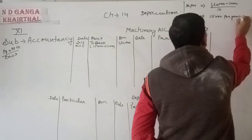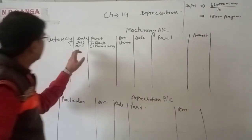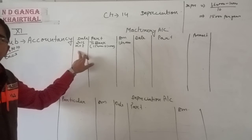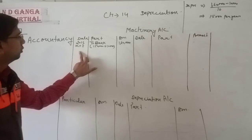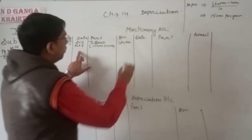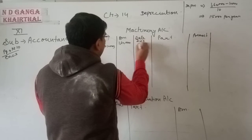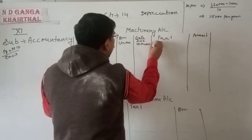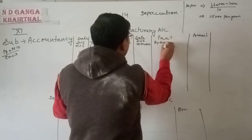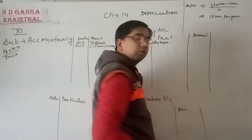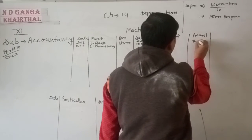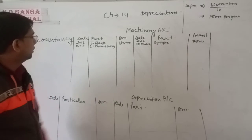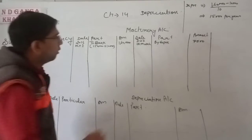Since the financial year closes on 31st March, for the first year we charge depreciation only for 6 months — from October 2016 to March 2017. So on 31st March 2017, by depreciation for 6 months: 7,500 rupees. The machinery account balance remains at 1,60,000 rupees.